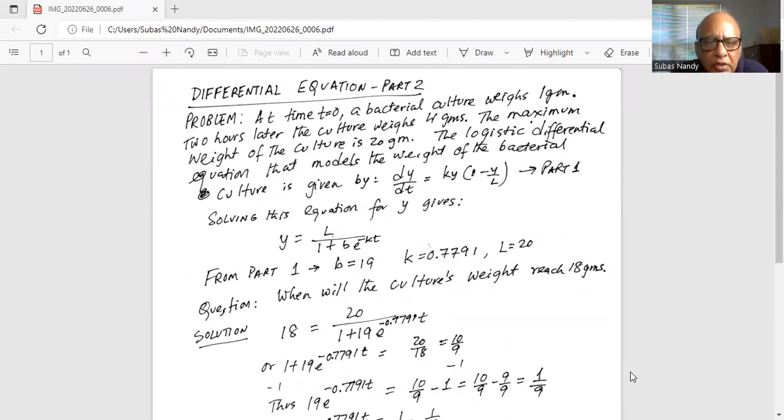Now if we solve the equation for y, we get y is equal to L divided by one plus b multiplied by natural number raised to the power of minus kt. From part one we get b equals 19, k equals 0.7791, and L equals 20.